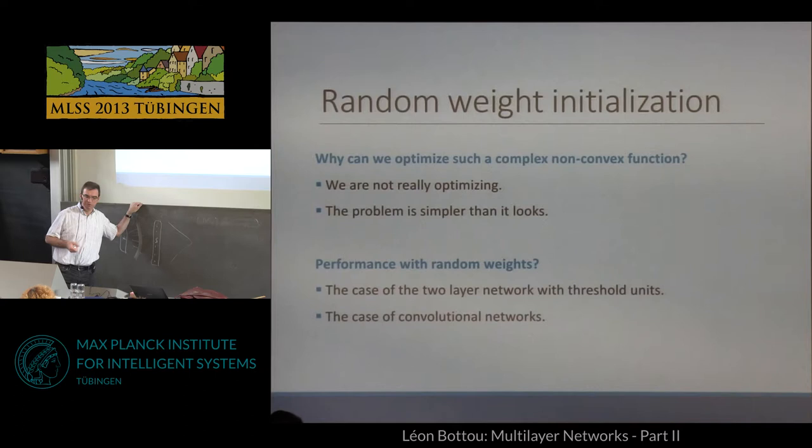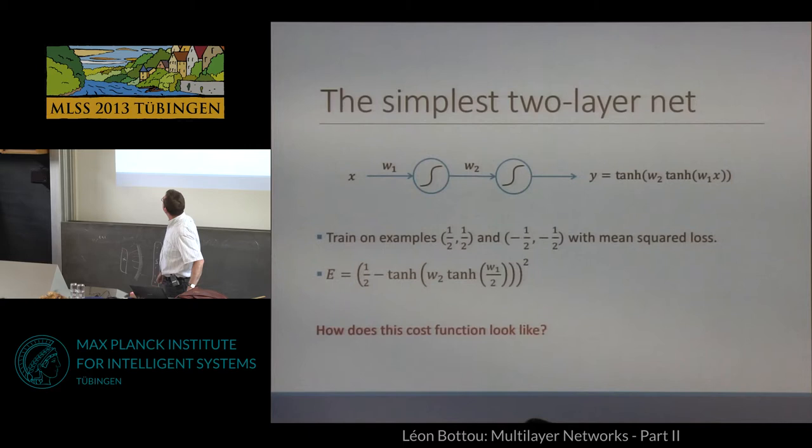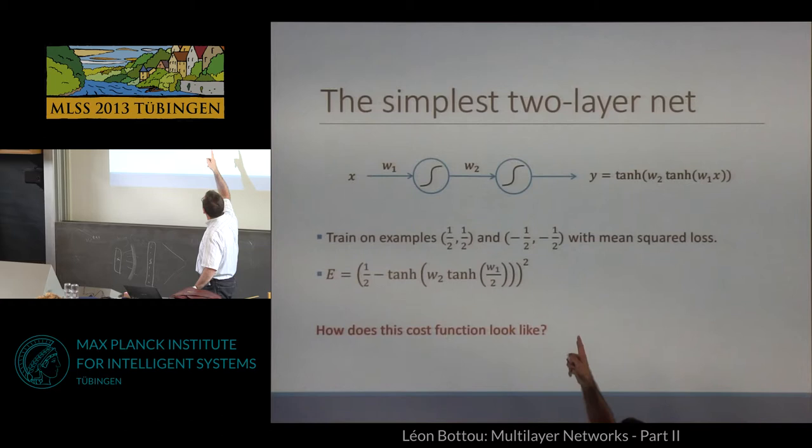Now we're going to study the simplest two-layer net we can think of. It has one input x, one weight w1 going to one hyperbolic tangent, a second weight w2, a second hyperbolic tangent. So y = tanh(w2 · tanh(w1 · x)). And I have two examples: one half as input, one half as desired output; and minus one half, minus one half — training with a mean squared loss.